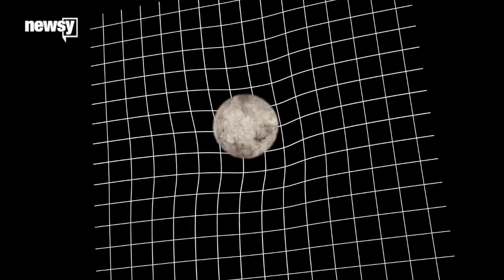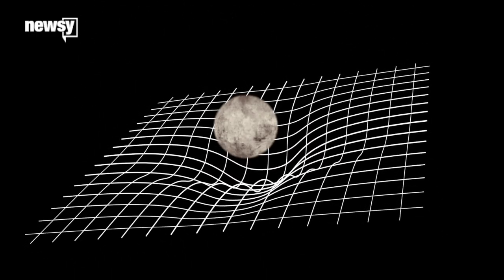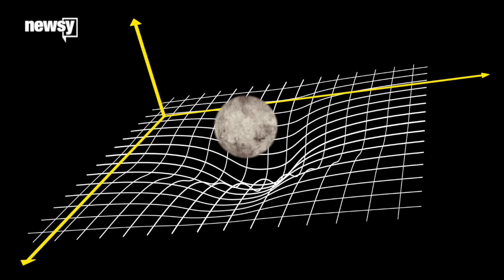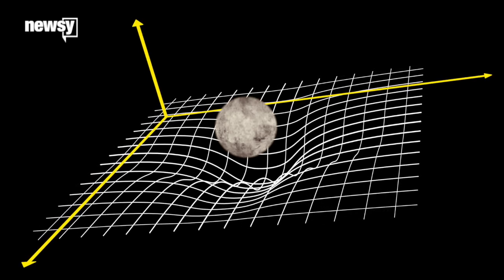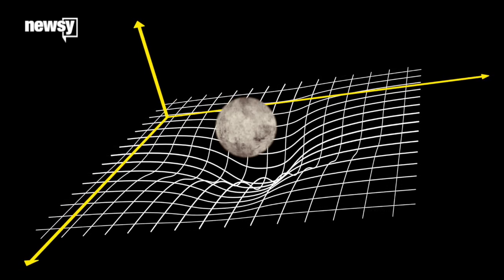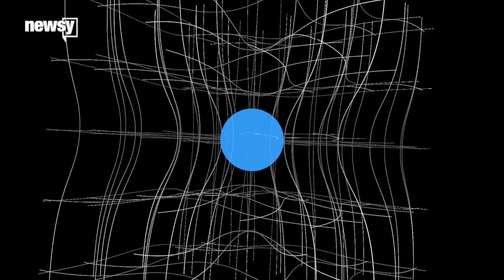Unfortunately, the trampoline analogy only goes so far, because the universe isn't two-dimensional. But it's a good starting point — you just have to translate it into 3D space. When you try to conceive of that in three dimensions, it just messes with your head completely.